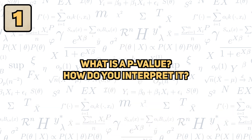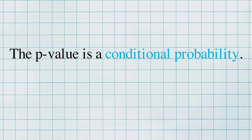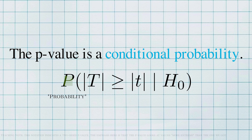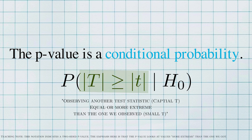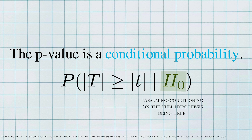What is a p-value? How do you interpret it? A p-value is a conditional probability. More specifically, it's the probability of seeing the test statistic you got, or something more extreme, assuming the null hypothesis is true.